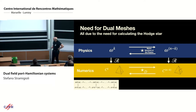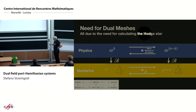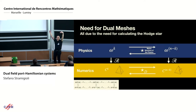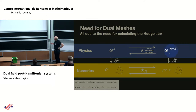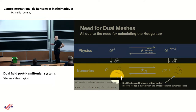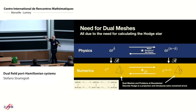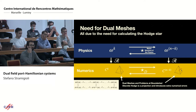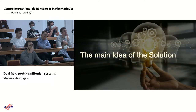The problem is that the Hodge star is the metric structure of space — it encodes the geometry, but also the physics, like permittivity in electromagnetics. When you do reduction, a k-form and its Hodge dual (an n-minus-k form) live in different spaces. This requires dual meshes, and is especially problematic for interconnection: if you have two different dual meshes, you get fictitious points outside the boundary, which is not what you want.